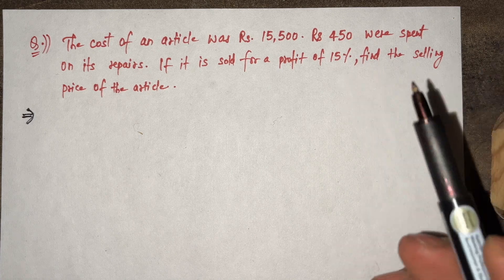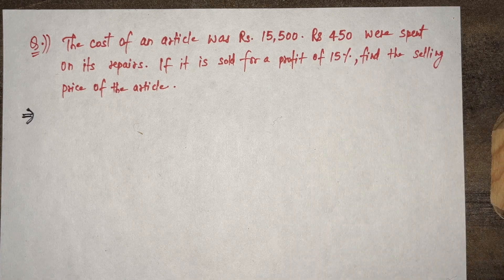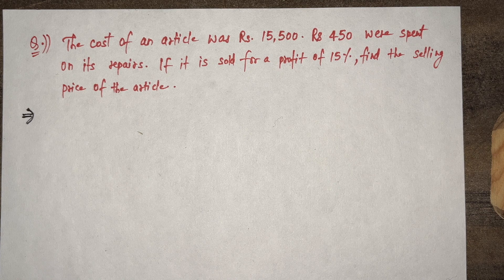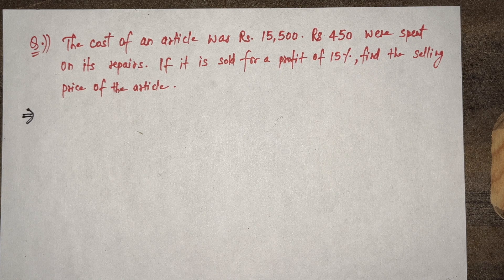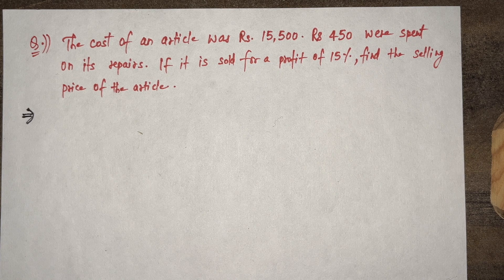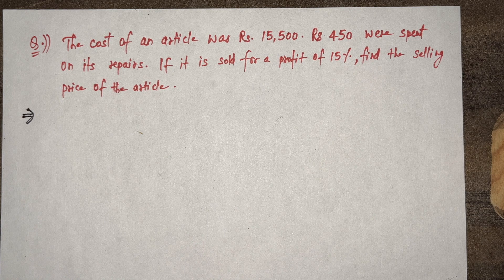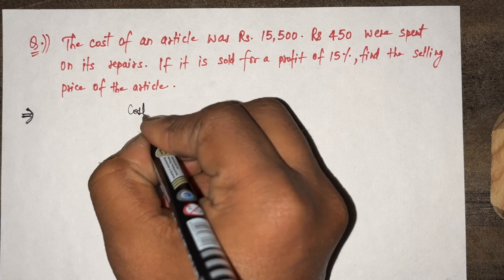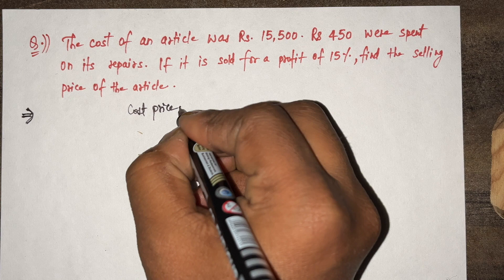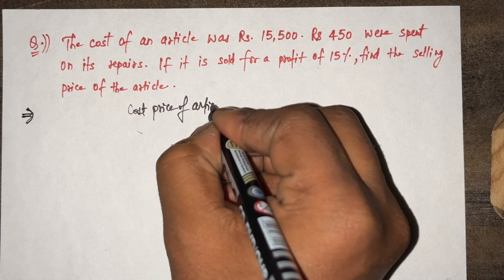The cost of an article was Rs. 15,500. Rs. 450 were spent on its repairs. If it is sold for a profit of 15%, find the selling price of the article. The cost price of the article is given.